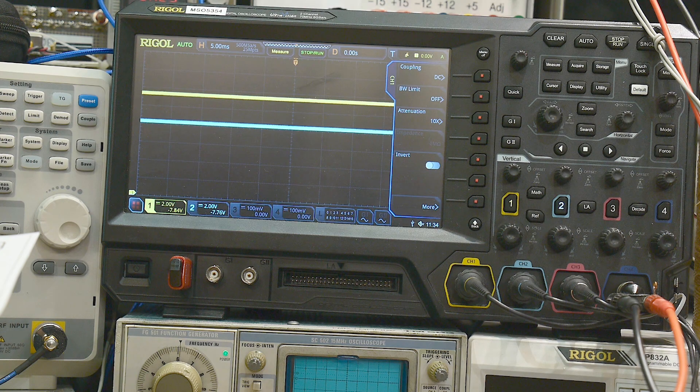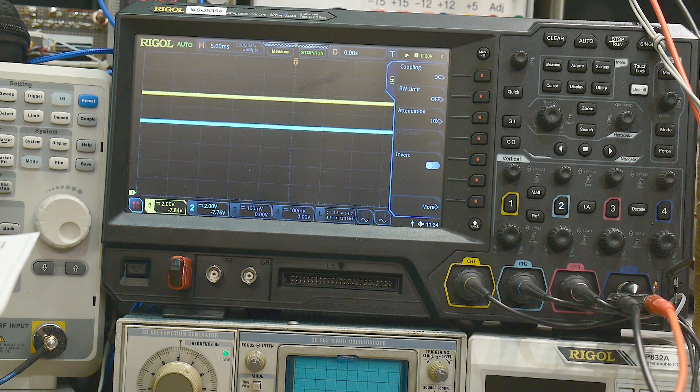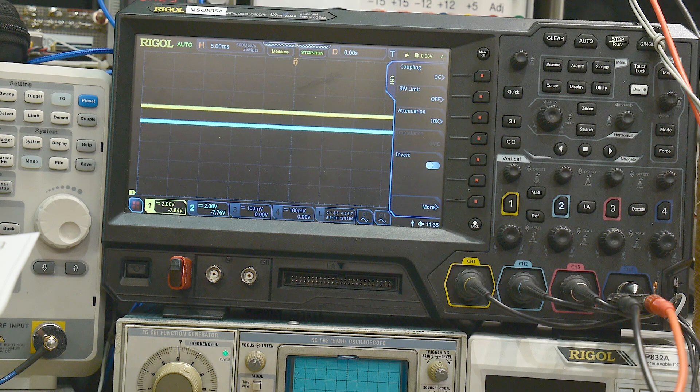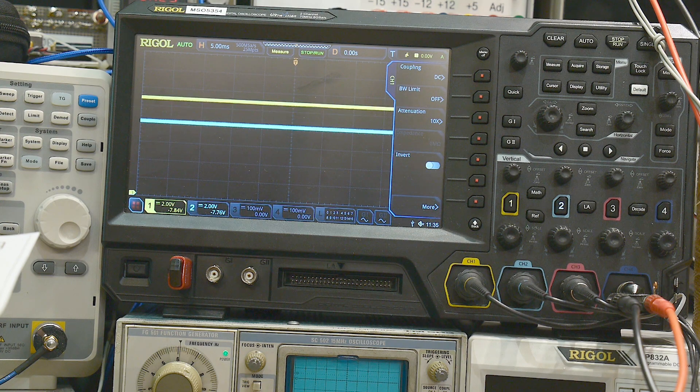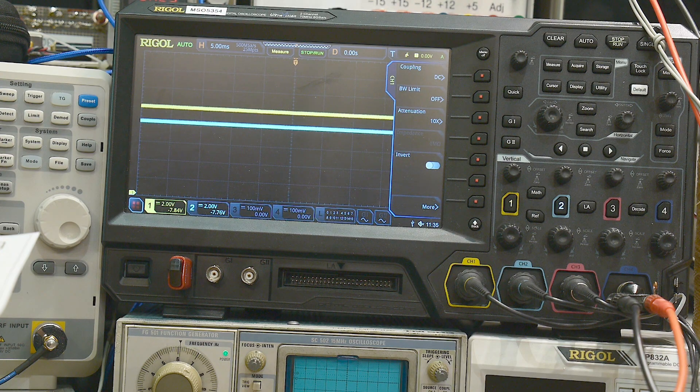This is 2 volts per division, so 2, 4, 6, 8, and we're putting in right here, we would be putting in 10 volts input. This is 10 volts and this would be 12 volts input, but our output is always 10 volts.